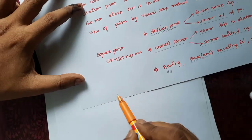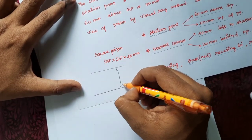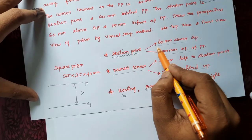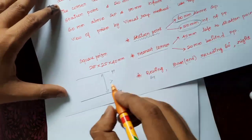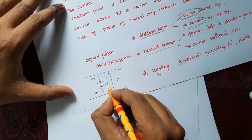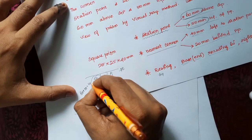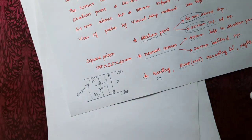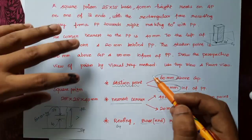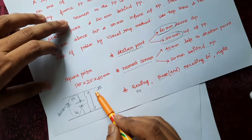Initially, we draw the ground plane at the bottom and the picture plane above it. The distance between the ground plane and picture plane should be more than the sum of the station point distances: 60 mm above GP plus 50 mm in front of PP equals 110. So the distance should be more than 110 mm — it can be 120, 125, 130, or 140.